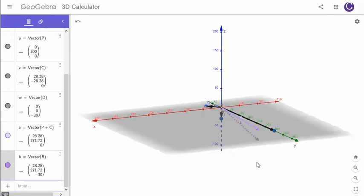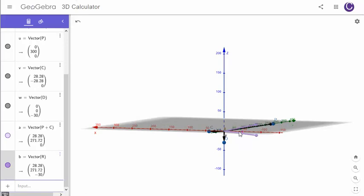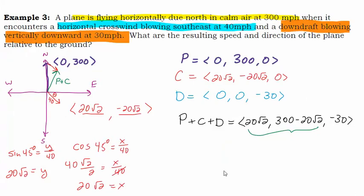The components of this vector under here, which is the actual flight of the plane, are 28.28, 271.72, and -30. Those components should be what we get if we punch these values into our calculator right here.